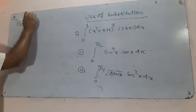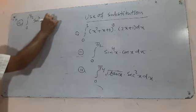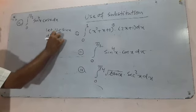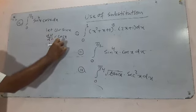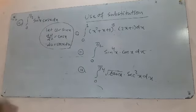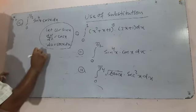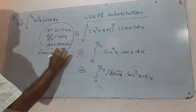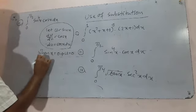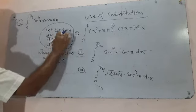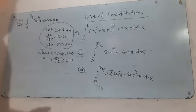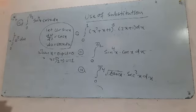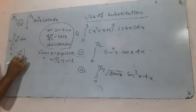Part (b) is the integral from 0 to π/2 of sin⁴x × cos x dx. Substitute u = sin x, so du = cos x dx. When x = 0, sin 0 = 0, so u = 0. When x = π/2, sin(π/2) = 1, so u = 1. The integral becomes the integral from 0 to 1 of u⁴ du, which equals u⁵/6... actually u⁶/6 — evaluated from 0 to 1, giving (1/6)(1⁶ - 0) = 1/6.